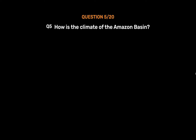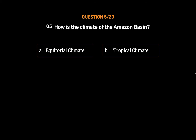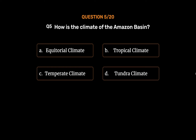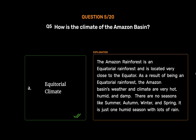Question number 5. How is the climate of the Amazon basin? Option A: Equatorial climate. Option B: Tropical climate. Option C: Temperate climate. Option D: Tundra climate. The correct answer is Option A, Equatorial climate. The Amazon rainforest is an equatorial rainforest located very close to the equator. As a result, the Amazon basin's weather and climate are very hot, humid, and damp. There are no seasons like summer, autumn, winter, and spring — it is just one humid season with lots of rain.